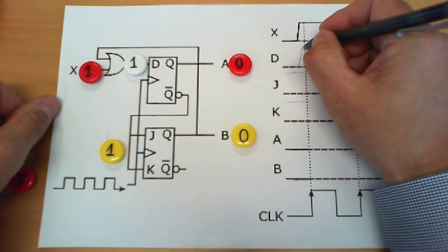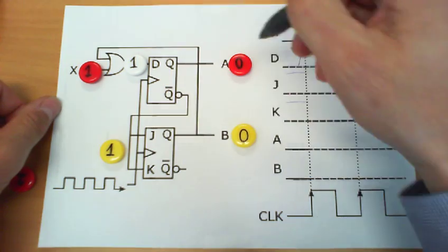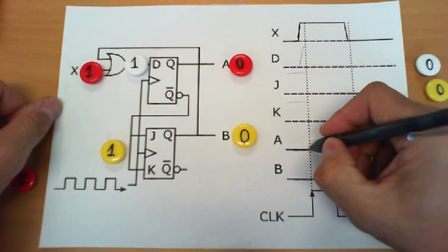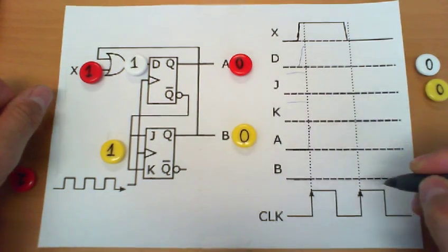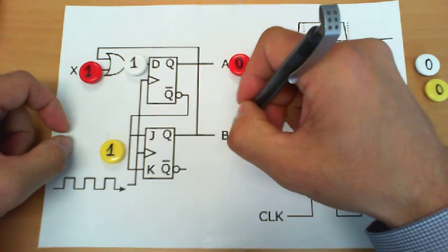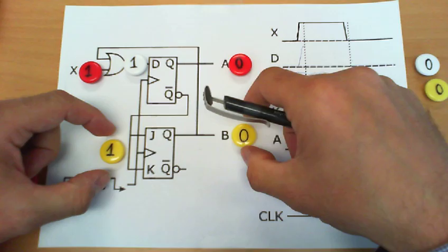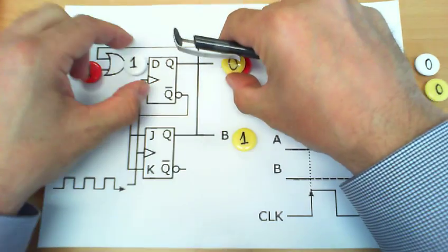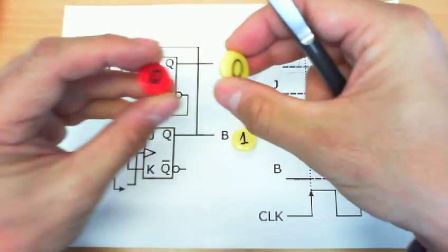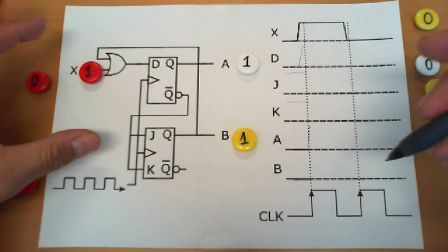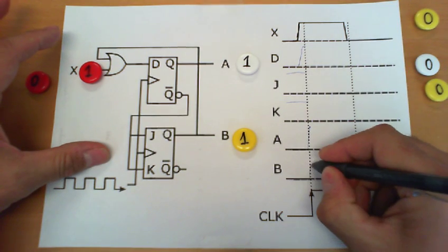Therefore what we know now is that A will become 1 so we can deduce this transition immediately after the edge. And this 0 will become 1 because the 1-1 combination here inverts the value of the output. So this is the value of A and B after the clock. And we can reflect that also in the diagram.